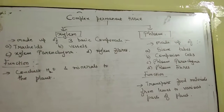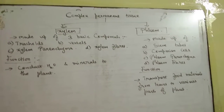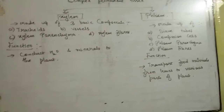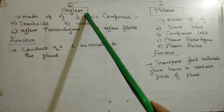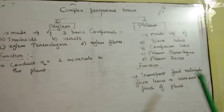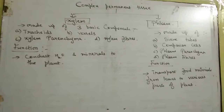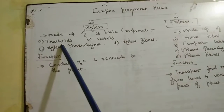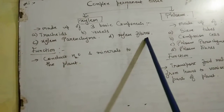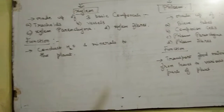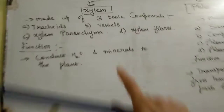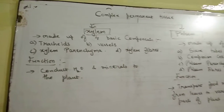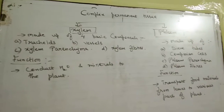Next is complex permanent tissue. They are of two types: xylem and phloem. Both are vascular or conductive tissues. Xylem conducts water and minerals to the plant, while phloem conducts food material to all parts of the plant. Xylem consists of four basic components: tracheids, vessels, xylem parenchyma, and xylem fibers.